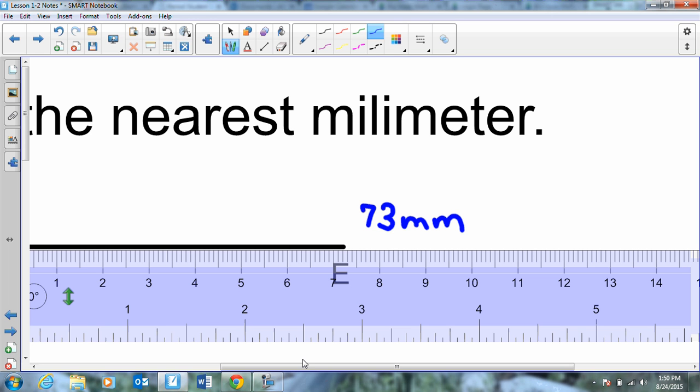73 millimeters. Does that make sense? Not 7.3 because 7.3 would be corresponding to the centimeters, right? And they're asking for 73 millimeters, not centimeters. Is everybody good with that? So when you get to the point in your book where they ask you to measure a segment, you're going to pull out a ruler. I've got some that I can loan you and measure it up.